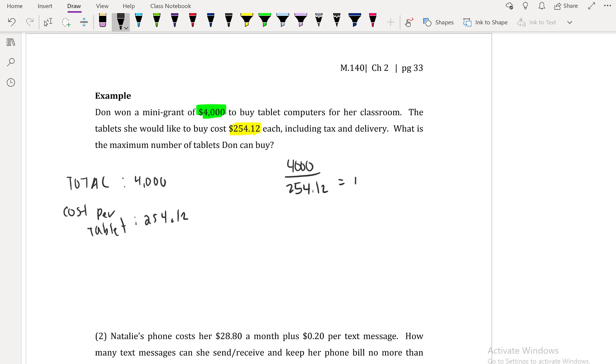So we want to know the maximum number of tablets Dawn can buy. Well, what we can do is we can do a division. We can say $4,000 being divided by $254.12 to get us how many units this is going to be costing. So we have that we can buy 15.74 computers. Now, does that make sense? Can you go to the store and say, I want 15.7 computers? No.